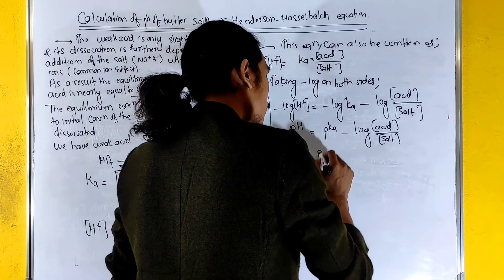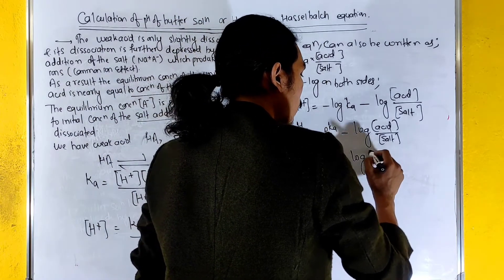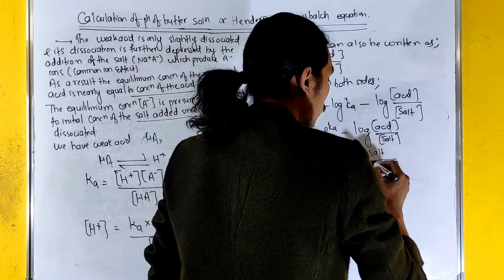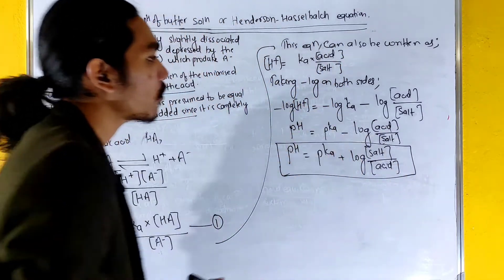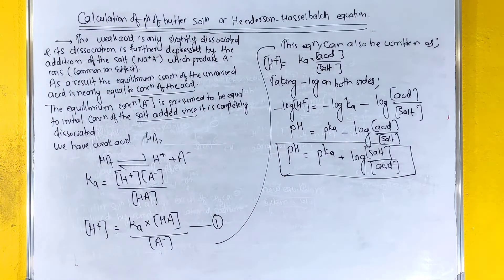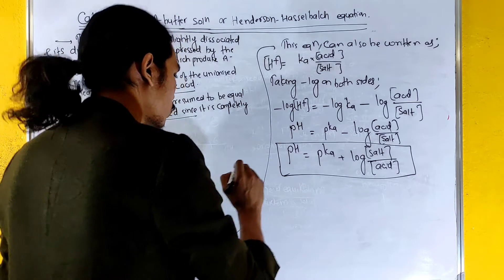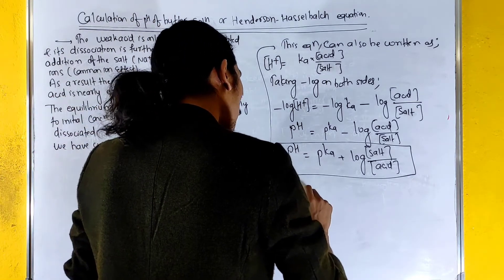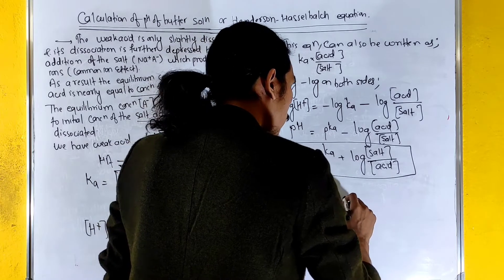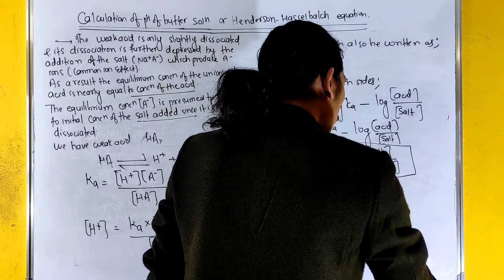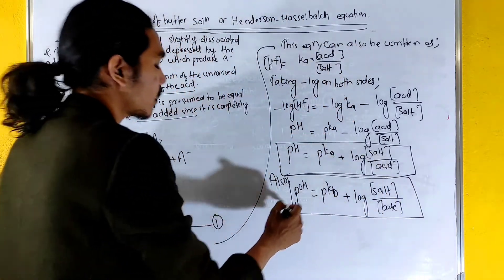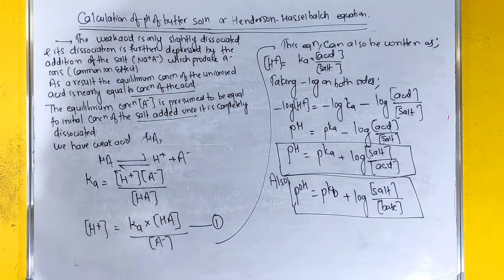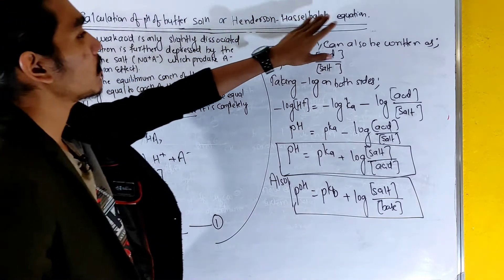So pH is equal to pKa plus log of salt divided by acid. This relationship is also called the Henderson-Hasselbalch equation.